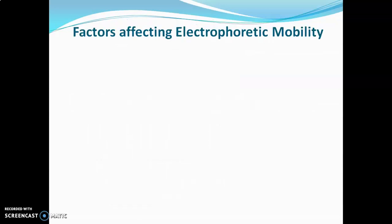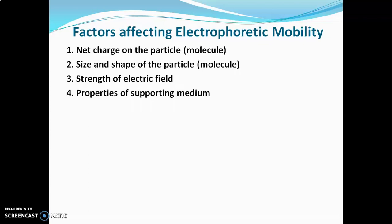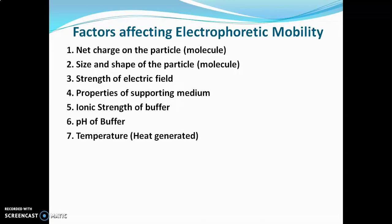Now we will see factors affecting electrophoretic mobility in detail. The factors are: first, net charge on the particle; second, size and shape of the particle; third, strength of electric field; fourth, properties of support medium; fifth, ionic strength of buffer; sixth, pH of buffer; and seventh, temperature or heat generated during the experiment.